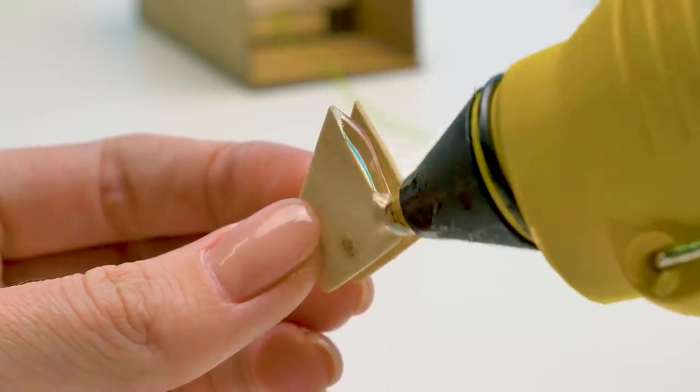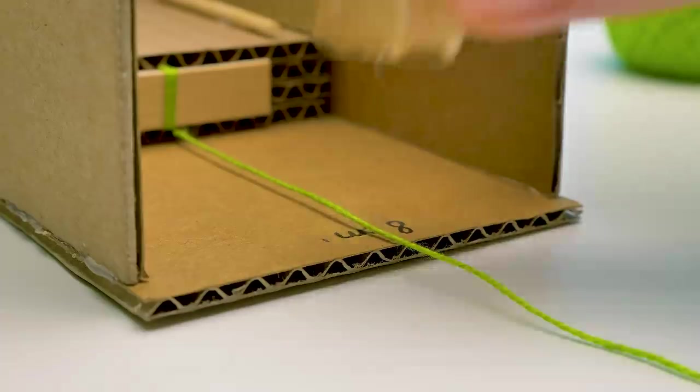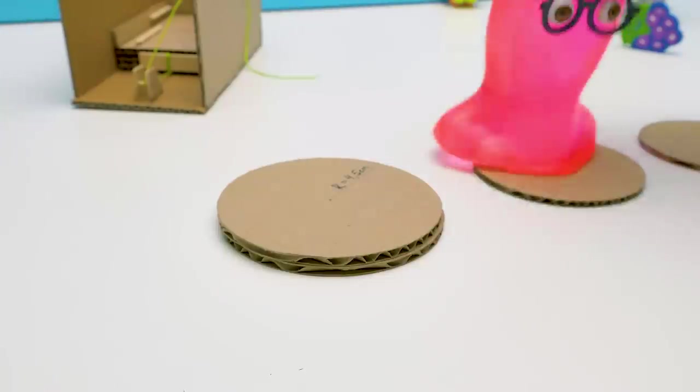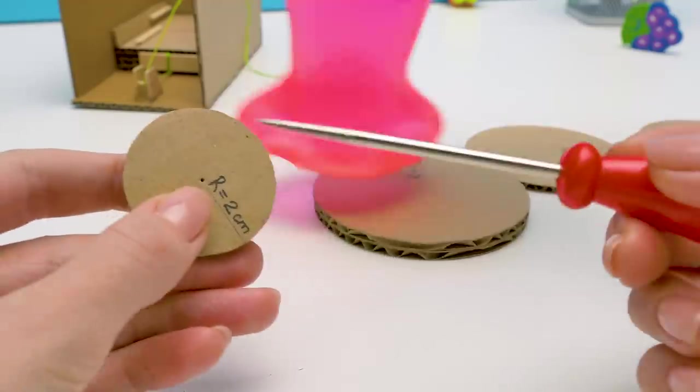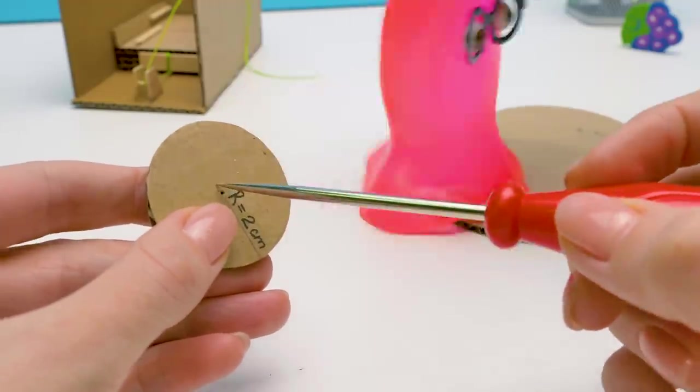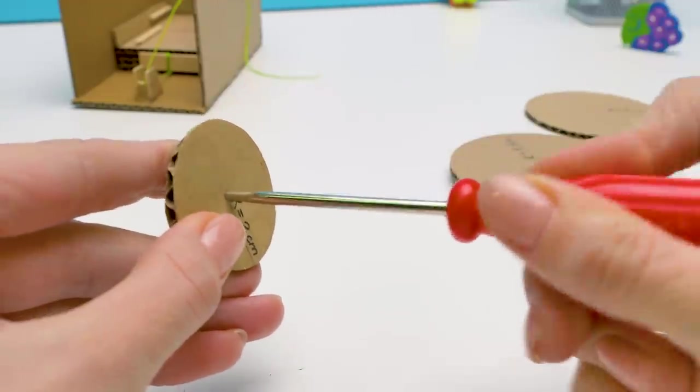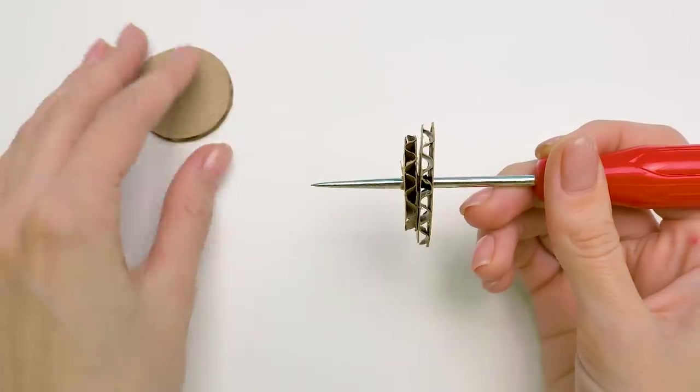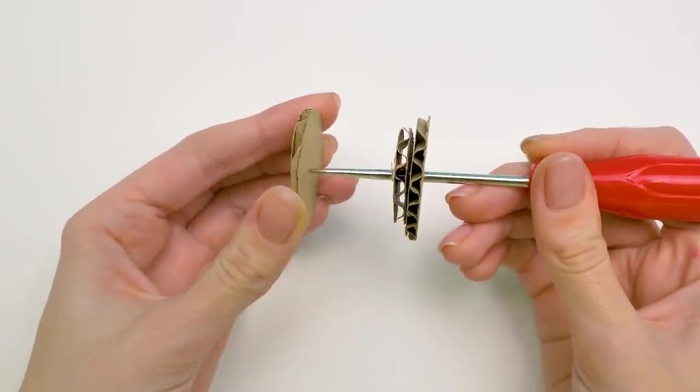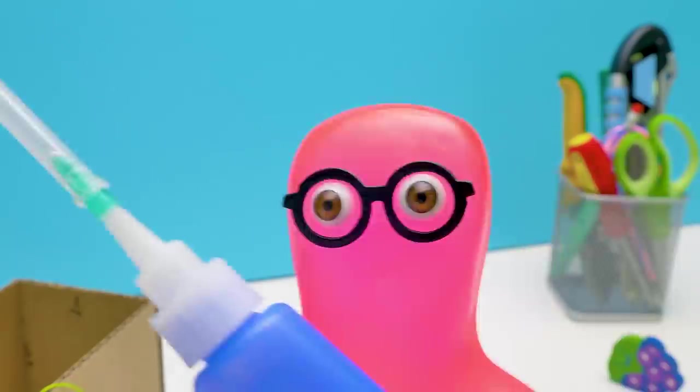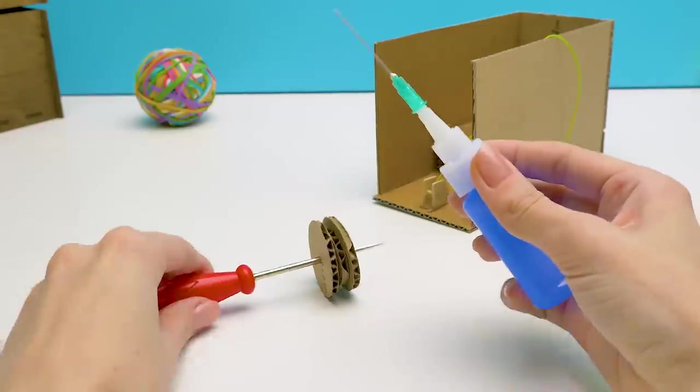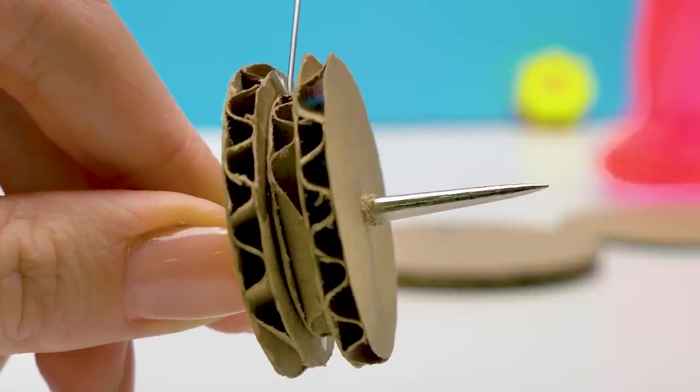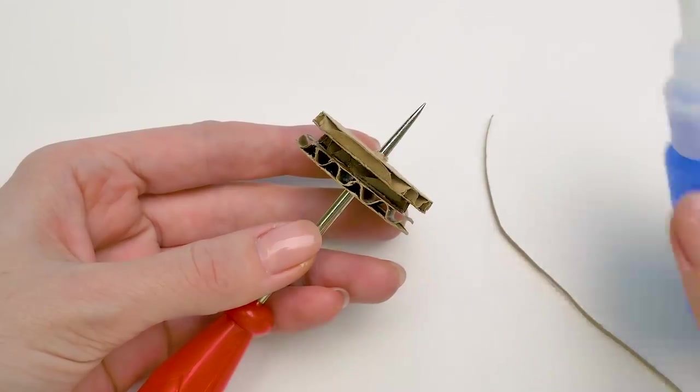I'll still need hot glue because we need this part to be securely attached to the cardboard. We need to make another part out of circles with a hole in the middle. Guys, this awl is very sharp. Be careful with it.